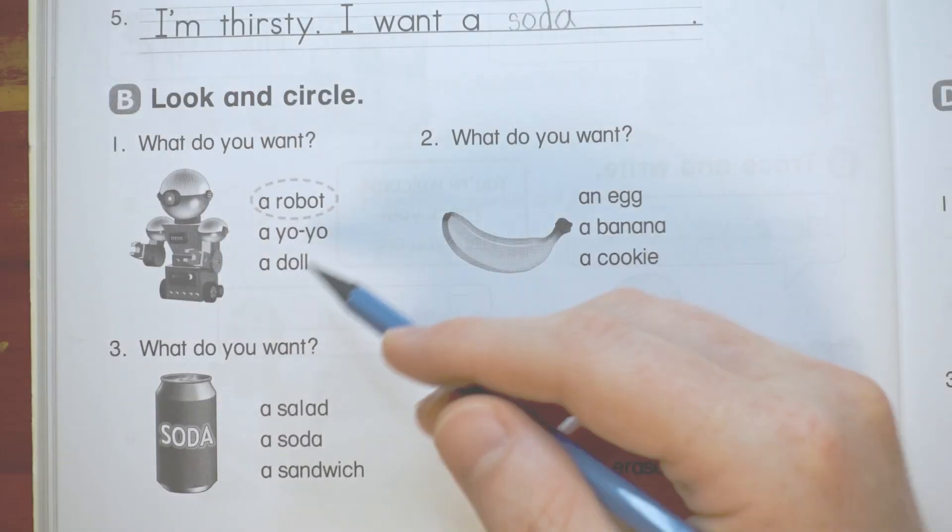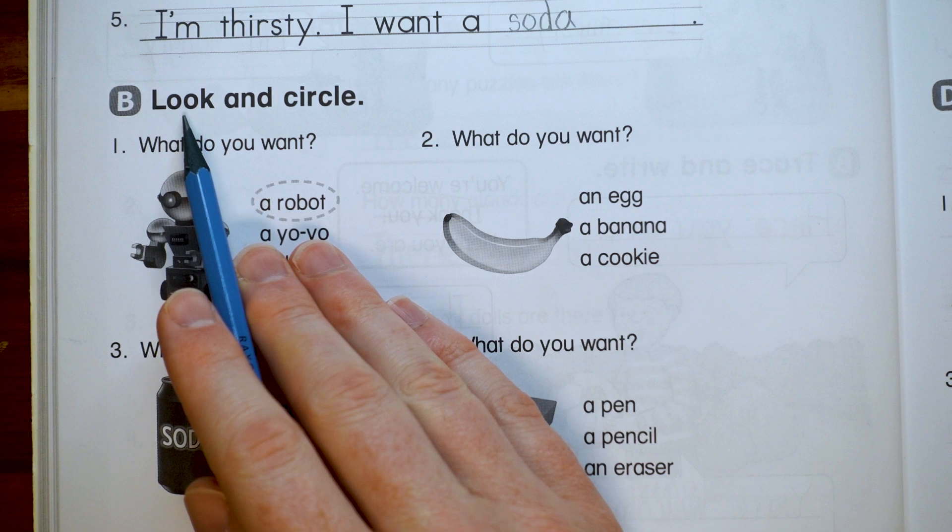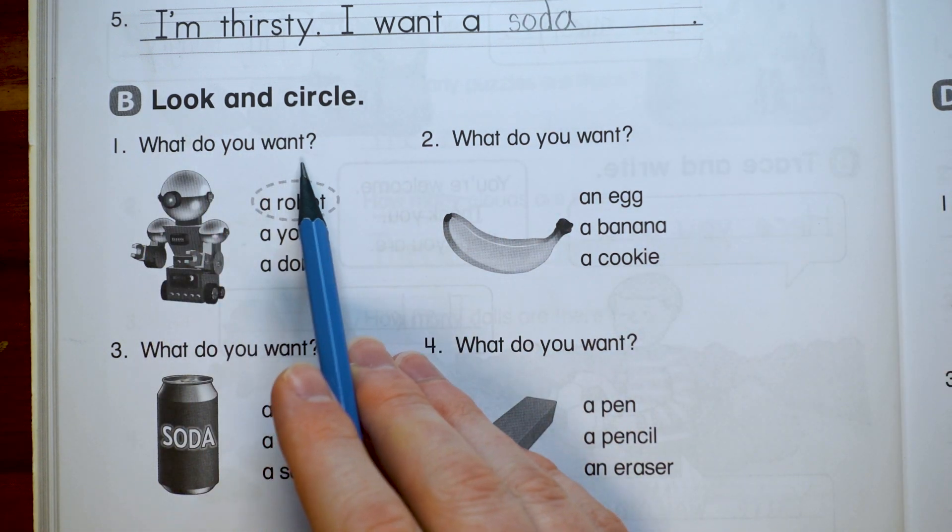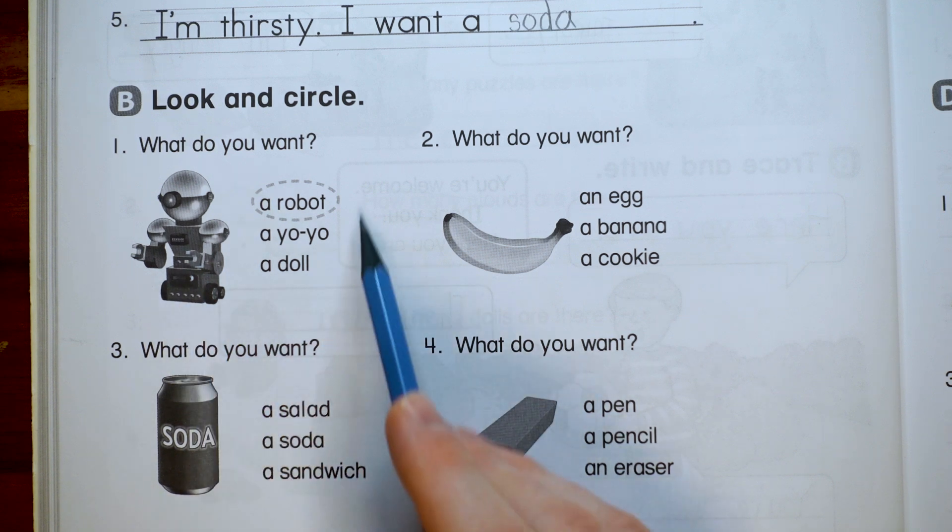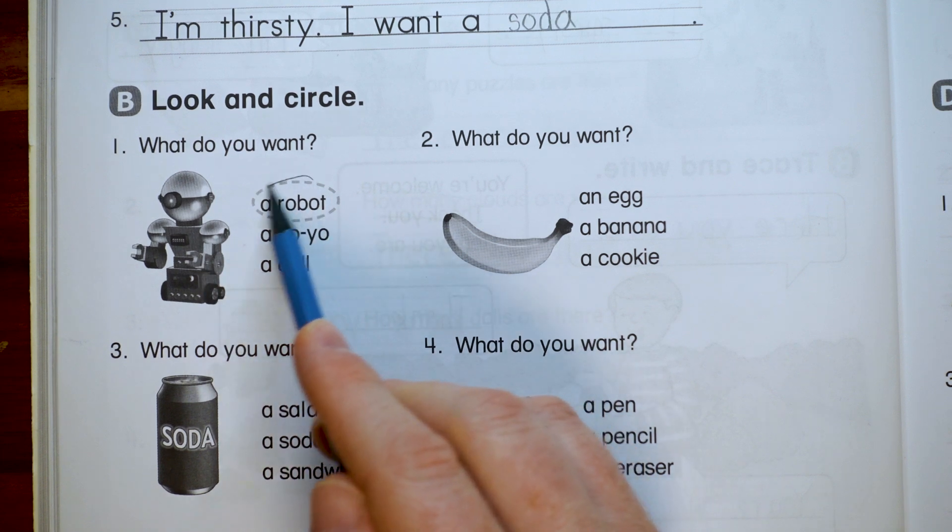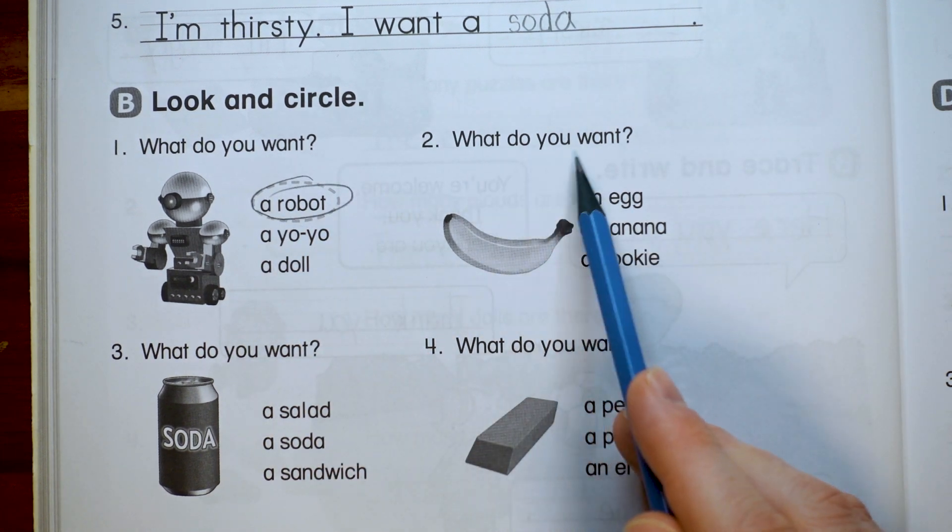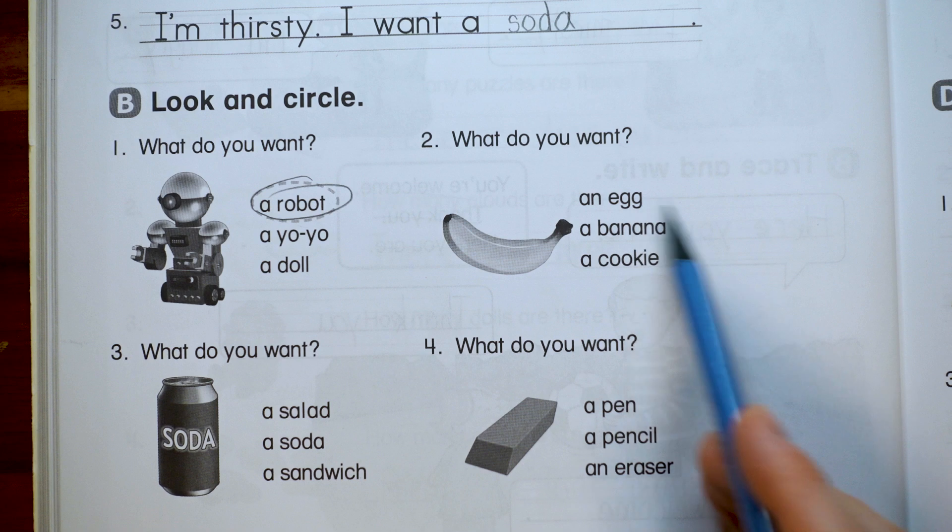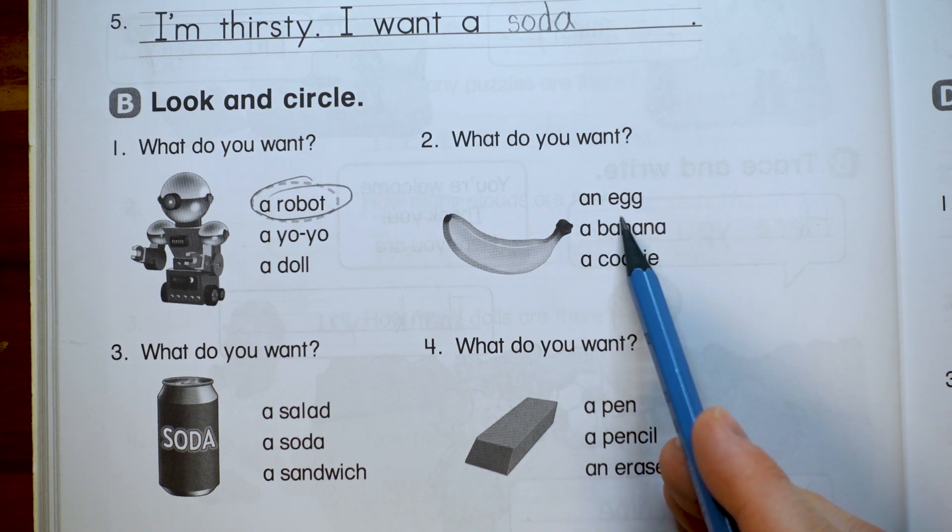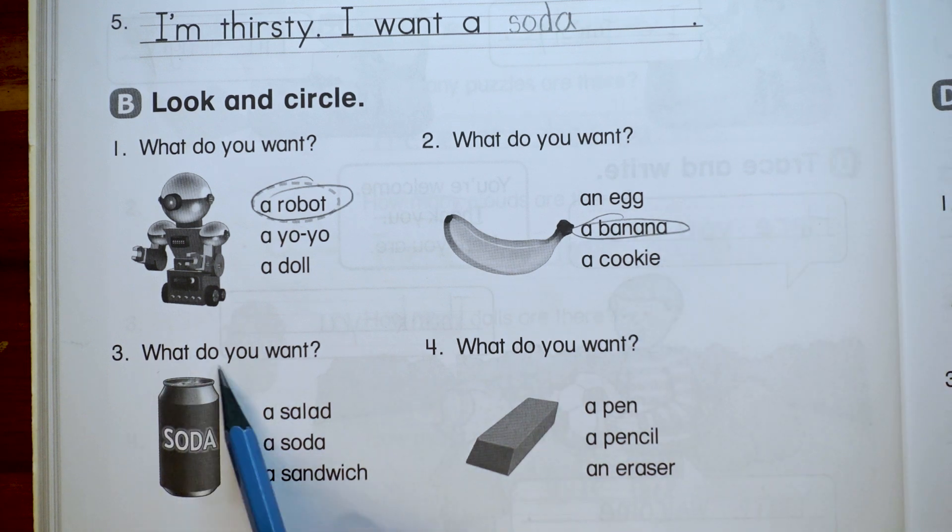Good job. This is Part B. It just says look and circle. So we're going to read the question, look at the picture, and then circle the right word. What do you want? A robot. What do you want? An egg, a banana, a cookie. A banana.